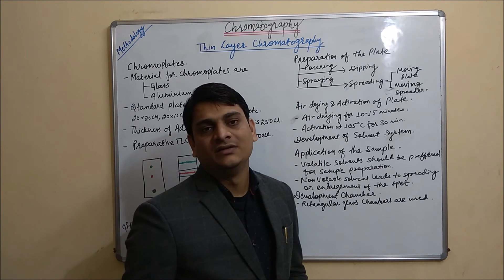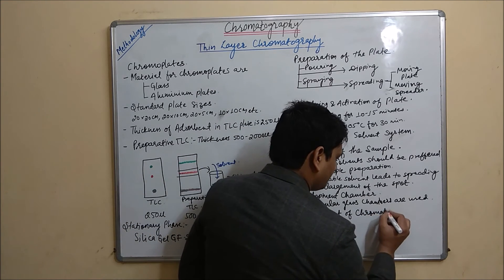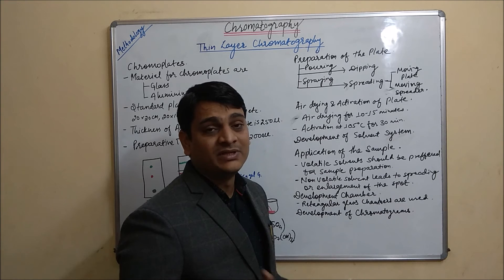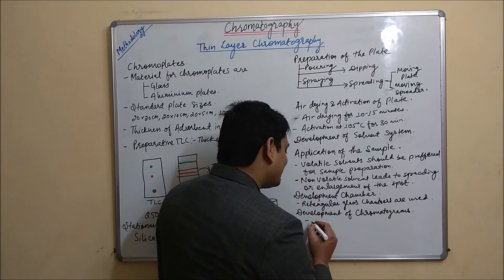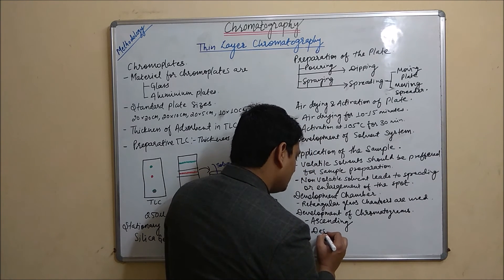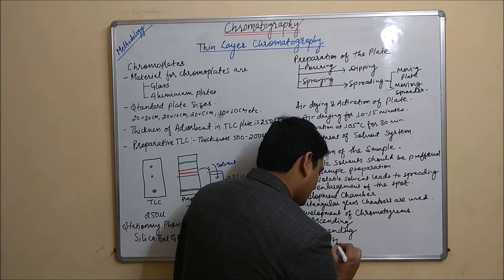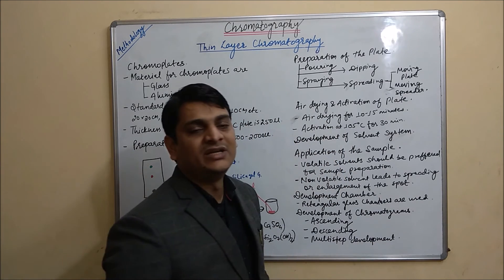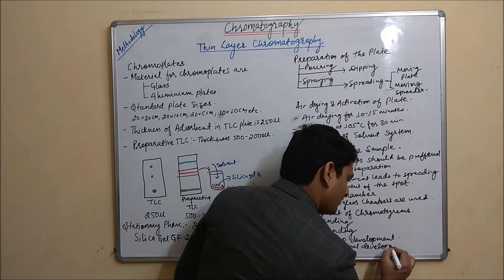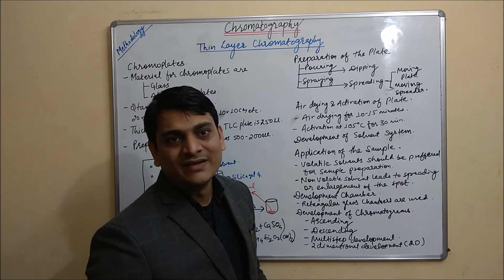Now coming to the step which is development of chromatograms. Development of chromatograms can be done by ascending method, descending method, multi-step development, two-dimensional development (also known as 2D development), and gradient elution.